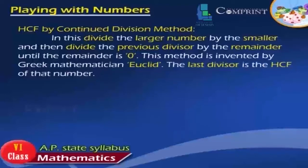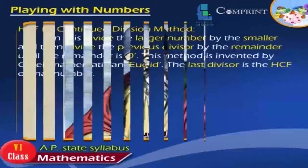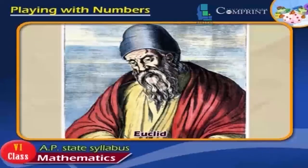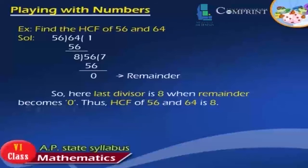HCF by Continued Division Method (Euclid's Method): Divide the larger number by the smaller, then divide the previous divisor by the remainder, and repeat until the remainder is 0. This method was invented by Greek mathematician Euclid. The last divisor is the HCF. Example: HCF of 56 and 64 — dividing 64 by 56 and continuing, the last divisor when remainder becomes 0 is 8. So, HCF of 56 and 64 is 8.